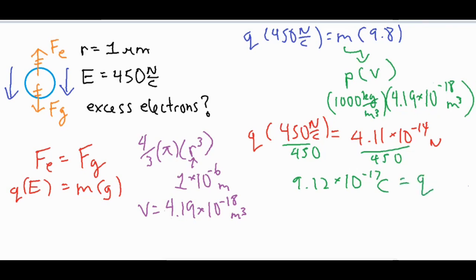Our q value comes out to 9.12 times 10 to the negative 17th coulombs. That's just the magnitude. Remember we identified that it is negative because of the situation over here, how the object has excess electrons and gets pushed upwards the opposite direction of the electric field. Now we have our q value so we can find our final answer, which is finding the amount of excess electrons.